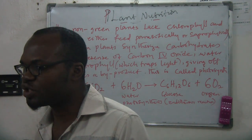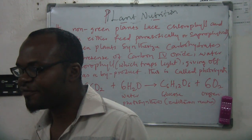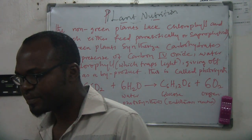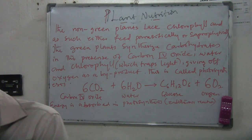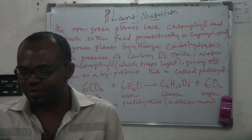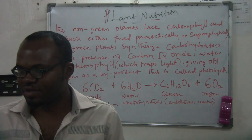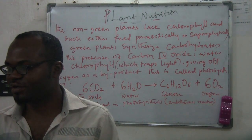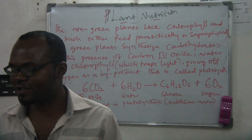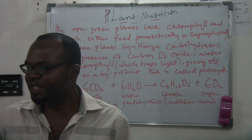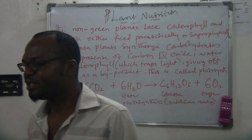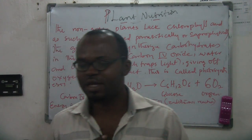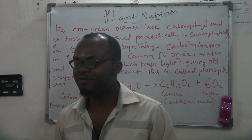We say that plants are autotrophs. They manufacture their food through photosynthesis. They don't feed on other organisms like animals do. If we want to eat, we can feed on flesh — cow meat, or we can feed on plants, fruits and other things. But plants use a process known as photosynthesis to get their food.